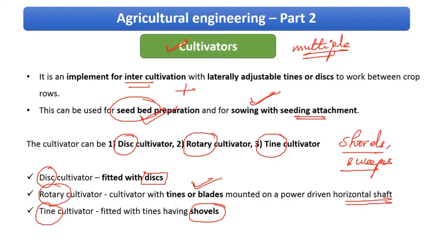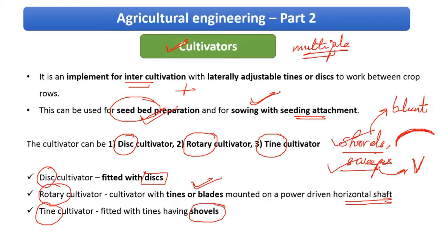Sweeps are used for fine turning of the soil, while shovels are used for side digging. Sweeps are basically V-shaped, while shovels usually have blunt ends — they can be square or cylindrical in shape. In further sections we'll look at pictures to differentiate between shovel and sweep. Based on our requirement or soil type in a particular place, we choose whether to attach a shovel or a sweep.